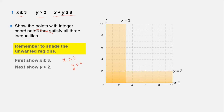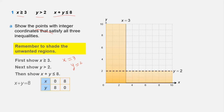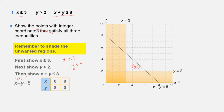The next inequality is x + y ≤ 8. We make a coordinate table: if x = 0, y = 8; if x = 8, y = 0. Plotting these two points, we draw the line x + y = 8. Taking a point such as (4, 3): 4 + 3 = 7, which is less than 8, so it satisfies the inequality. The unwanted region lies above the line, so we shade above it.